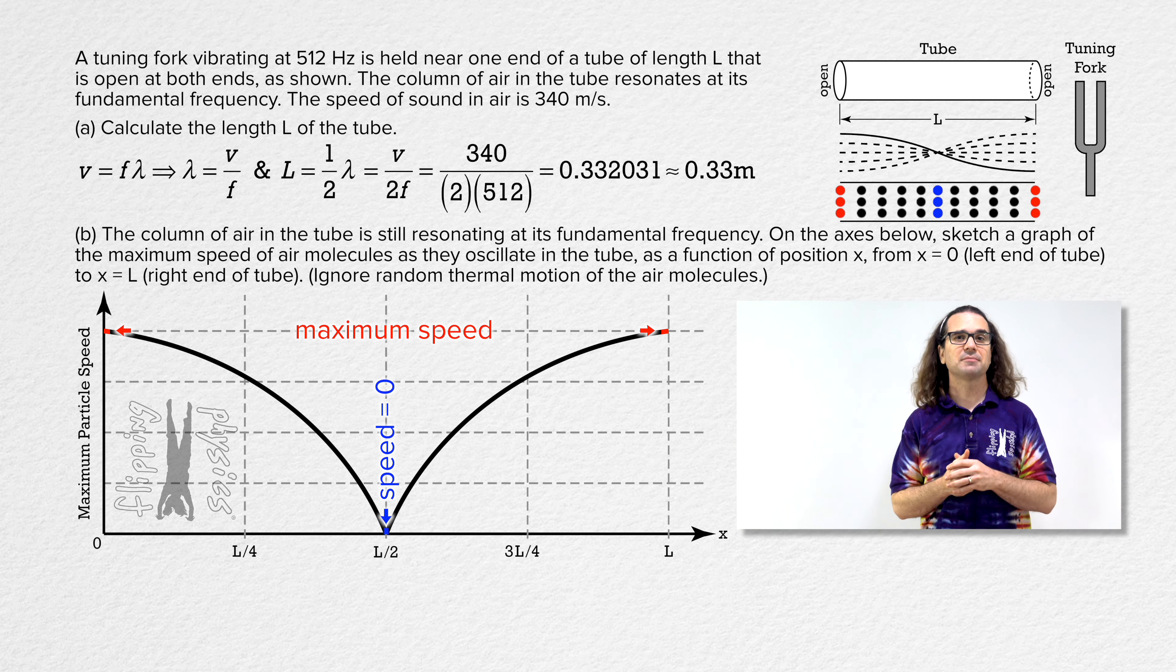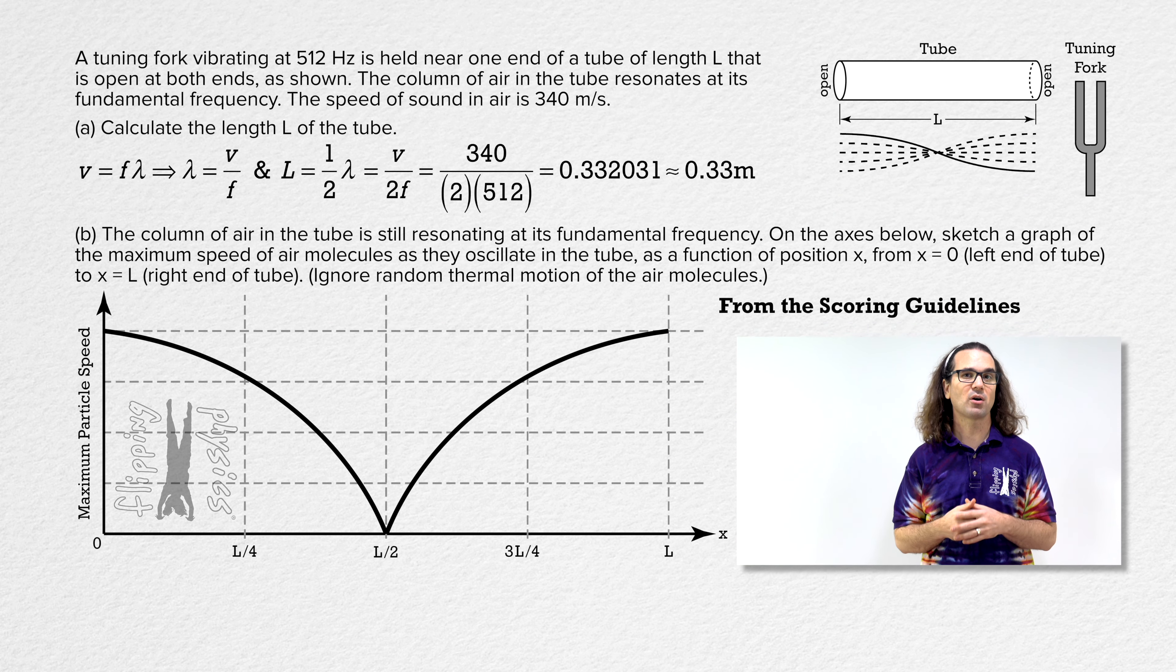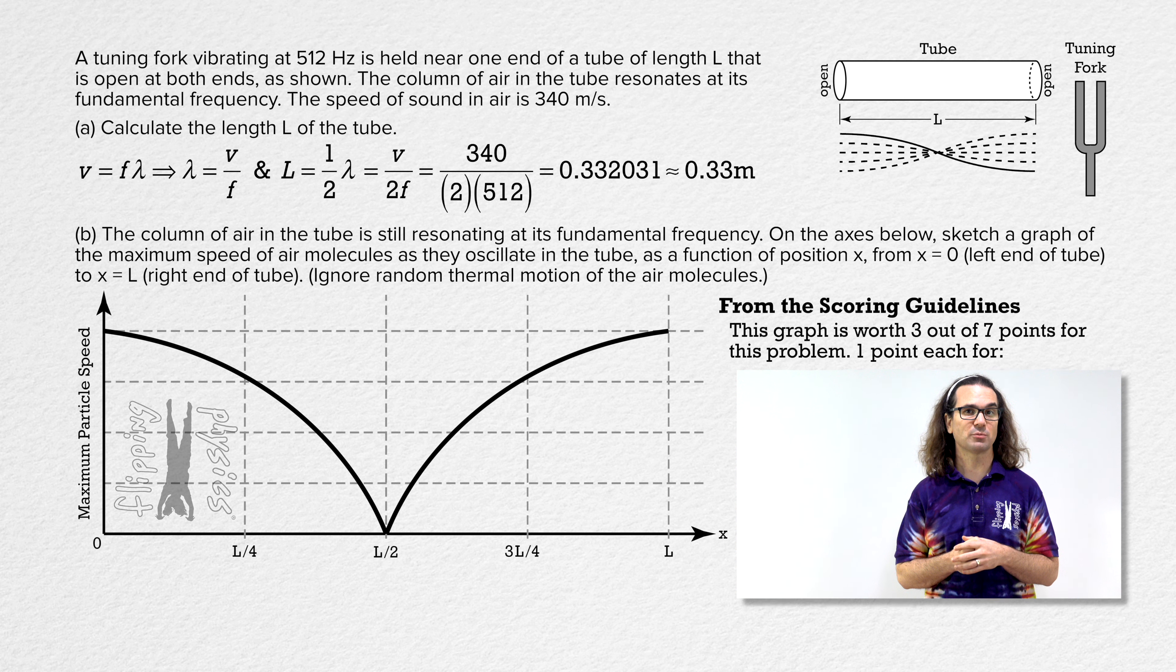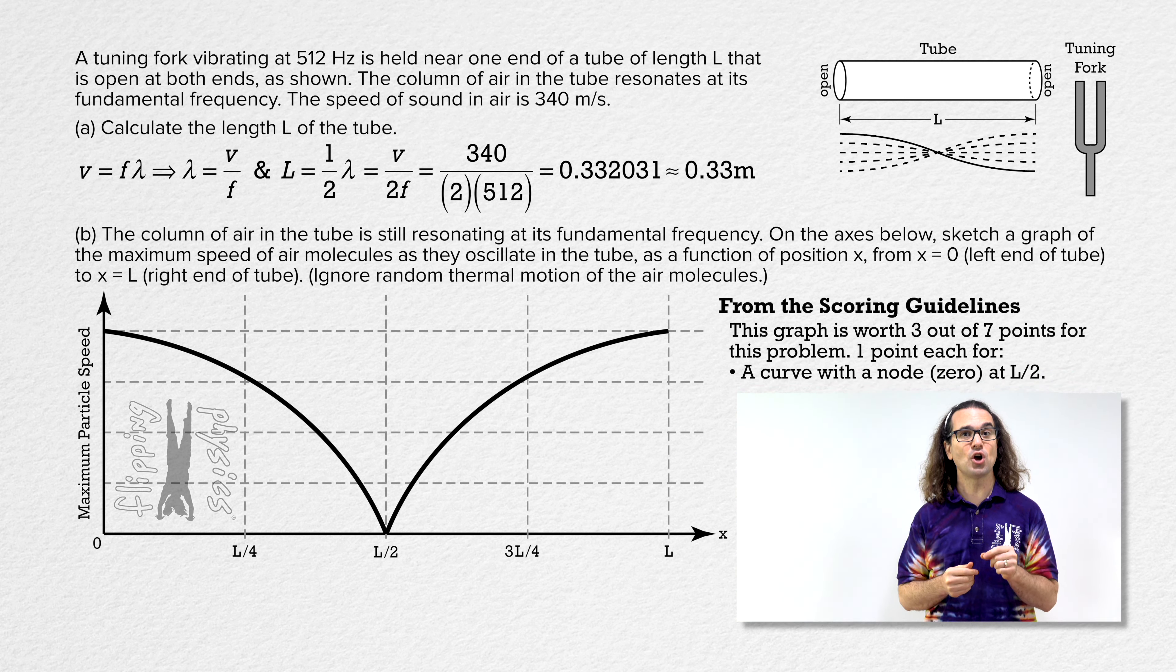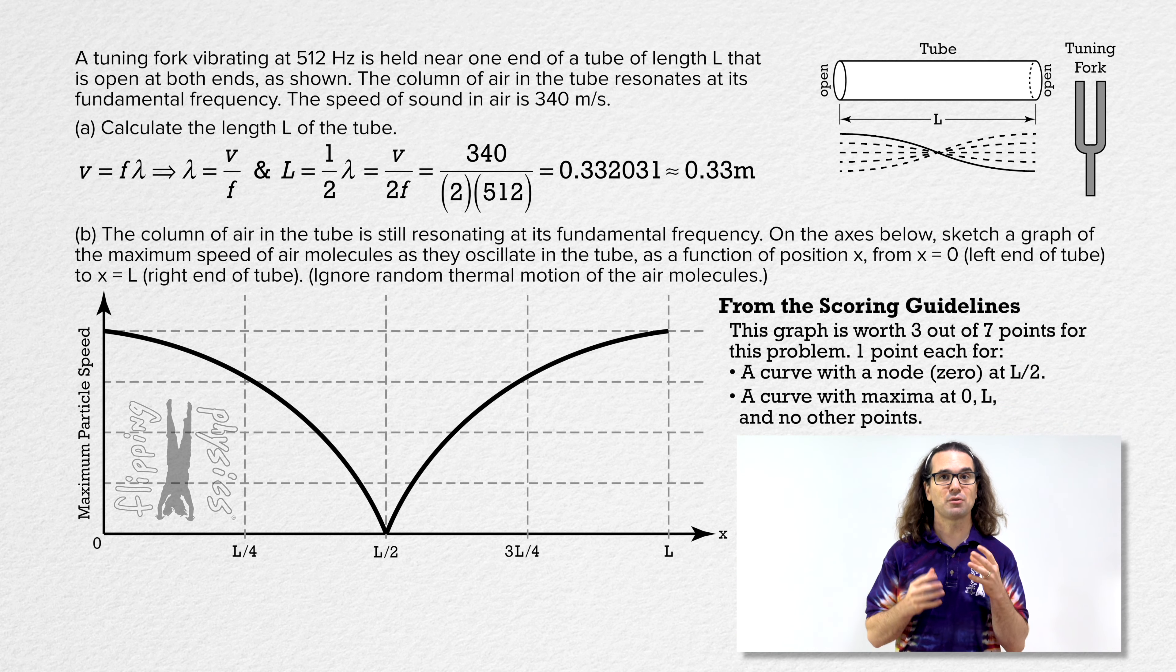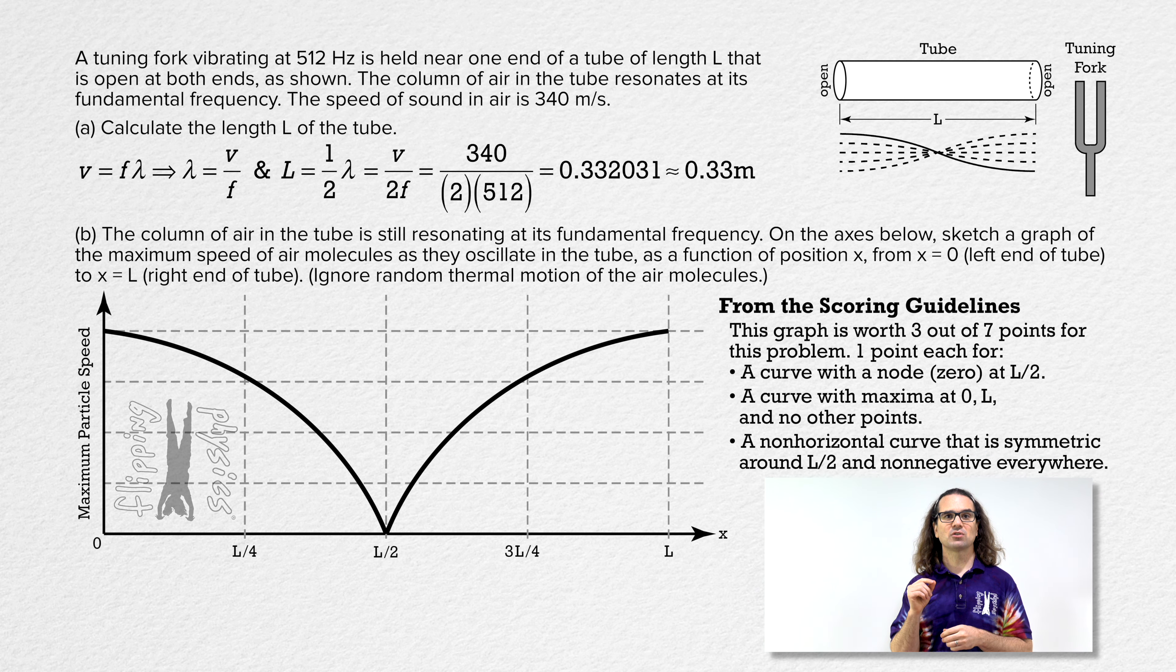Thanks Billy, this looks great. I want to say a few things about the scoring guidelines for part b. This graph is worth 3 out of 7 points for this problem. One point each for a curve with a node or 0 at L over 2, a curve with maxima at 0 L and no other points, a non-horizontal curve that is symmetric about L over 2 and non-negative everywhere.